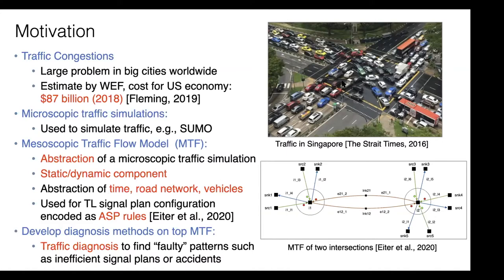Looking at the picture on the upper right, it might be a bad signal plan causing the traffic jam, but it might just be the green vehicle which causes the problem. So the next step is doing traffic diagnosis based on this flow model.